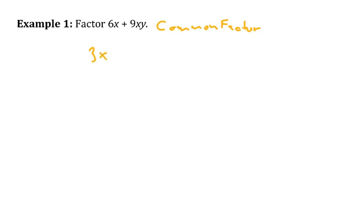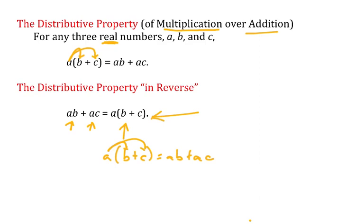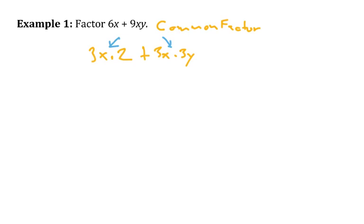In these two terms, I'm going to rewrite them to identify that there is a common factor of 3 and a common factor of x. In the first term, it's 3x times 2 that gives me 6. In the second term, it's 3x times 3y that gives me 9xy. If there is a factor in common between two terms, then we can bring that out or factor it out using parentheses. So I can factor out the 3x, and what's left behind in parentheses is 2 from the first term and 3y from the second. That's factoring out a common factor.